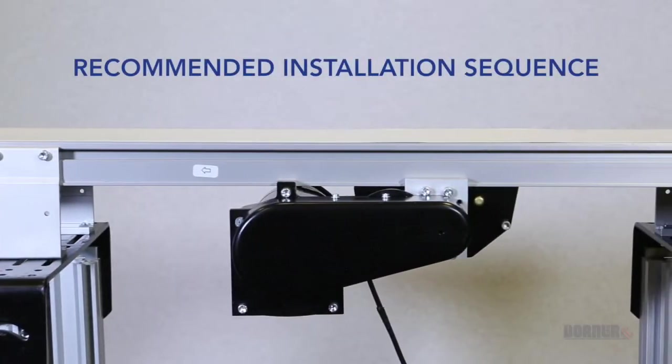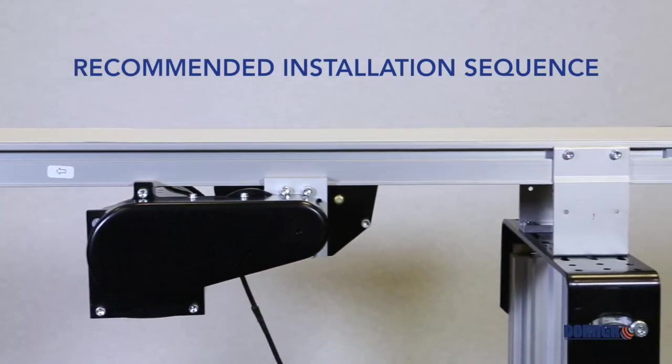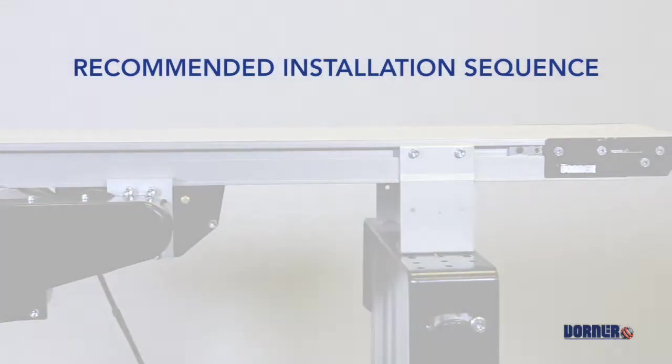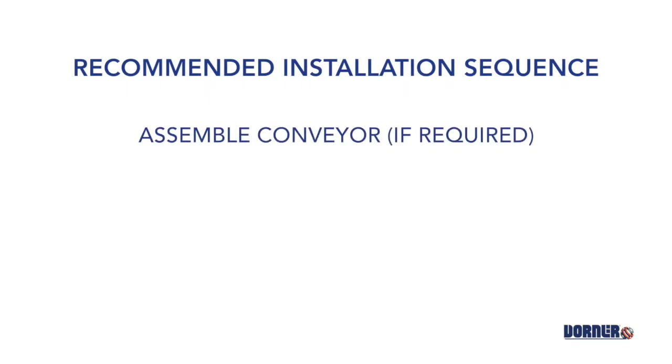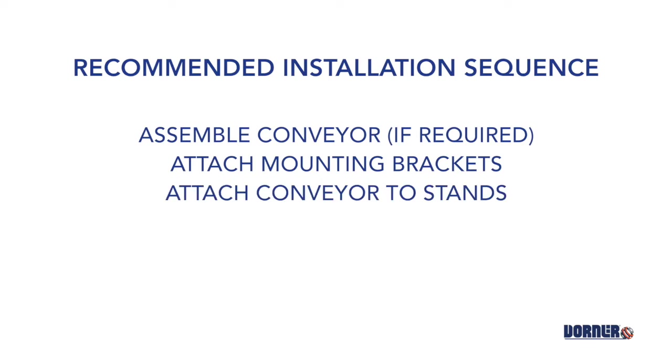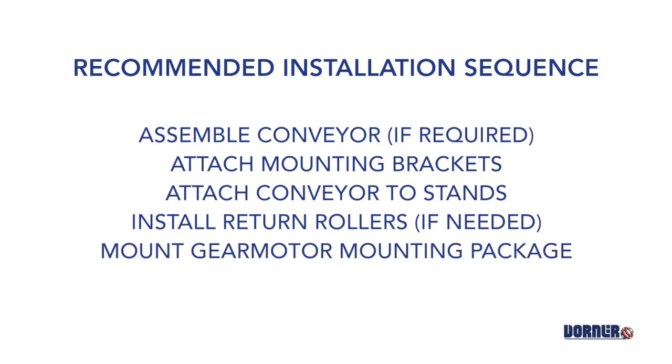The recommended installation sequence for 2200 series conveyors is: assemble the conveyor if required, attach mounting brackets to the conveyor, attach the conveyor to the stands, install return rollers if needed, mount the gear motor mounting package, and finally attach guides and accessories.